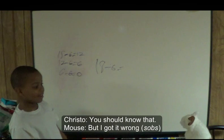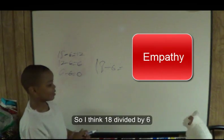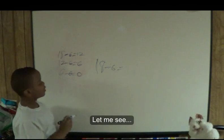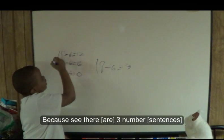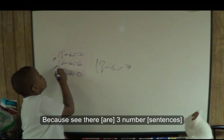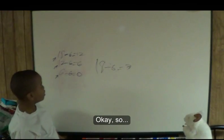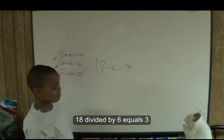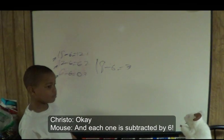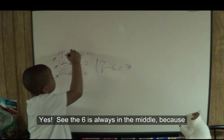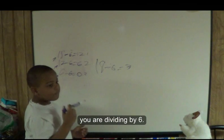You should know that. But I got it wrong. Don't cry. I think eighteen divided by six — let me see — it's three. Yes. Because, see, there's three number sentences. So, look at the number sentences that I put out next to. So, eighteen divided by six equals three, because you have three number sentences. And each one is subtracted by six. See, the six is always in the middle, because you're divided by six.